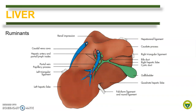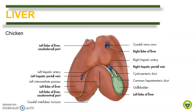In ruminants, the lobation is not as evident as with the previously discussed animals. Both the left and right hepatic lobes are not further subdivided into lateral and medial lobes. The caudate lobe is divided into papillary and caudate processes, while the quadrate lobe is undivided. In birds, only two lobes are present: the left hepatic lobe and the right hepatic lobe. Depending on the species, these lobes may be further subdivided to form smaller processes. Note that gallbladder is present in birds and is located at the right lobe; however, it is absent in most pigeon and parrot species.